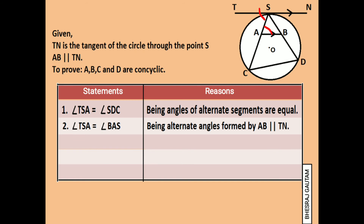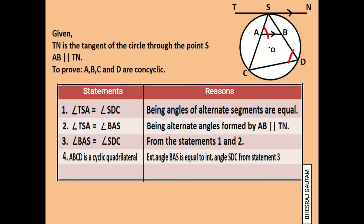Now, comparing statements 1 and 2, we can write that angle BAS is equal to angle SDC, as shown on the screen. Therefore, ABCD now becomes a cyclic quadrilateral — angle BAS being the exterior angle of cyclic quadrilateral ABCD and angle SDC being the opposite interior angle with equal angular value. This is one of the major properties of a cyclic quadrilateral.